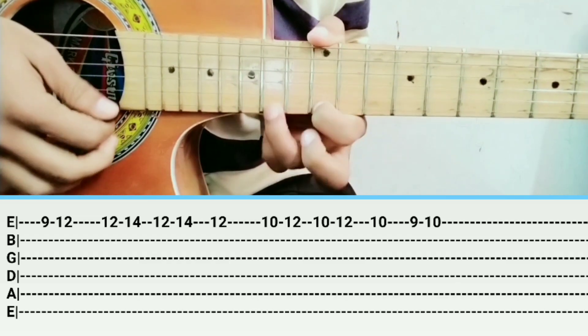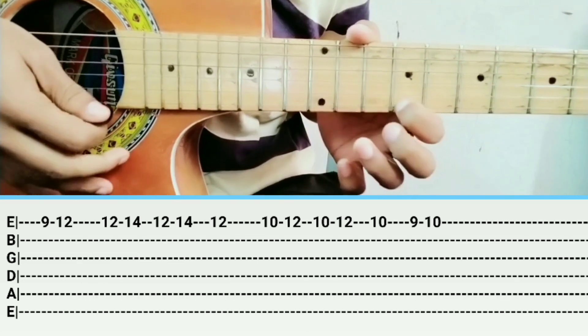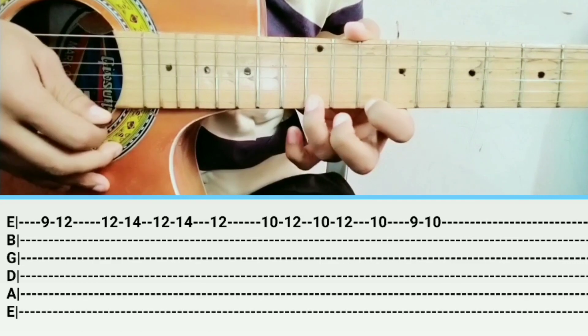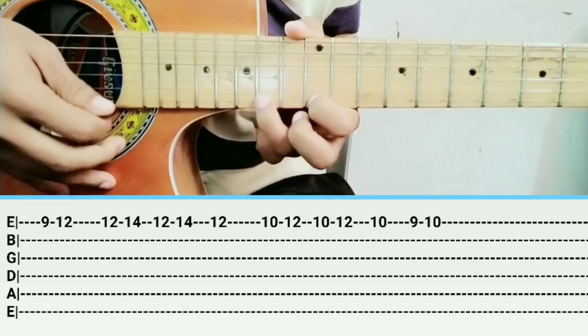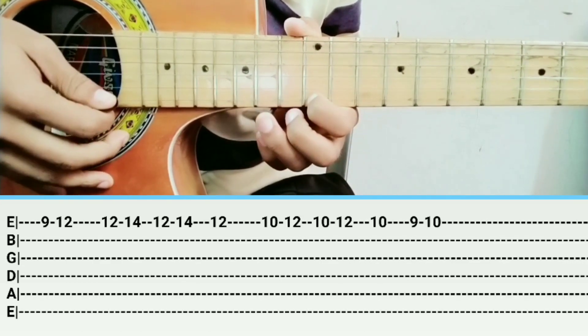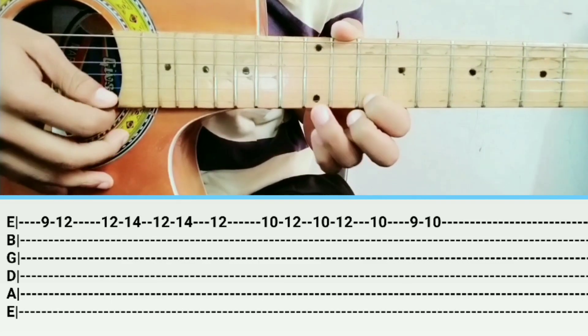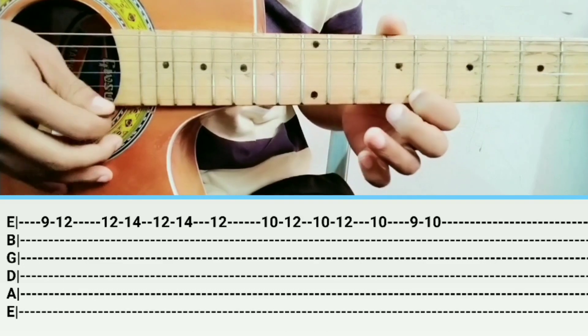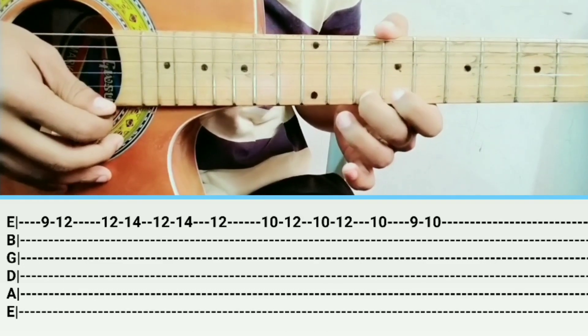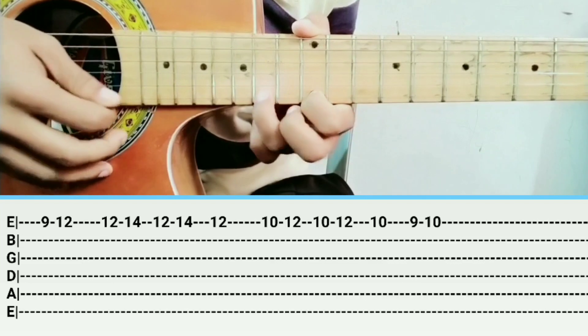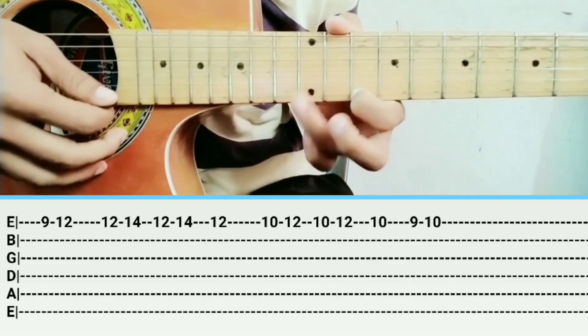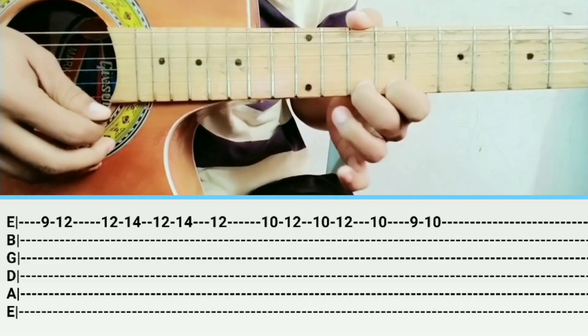So why are 9-12 string, sub E string fill 14-14-12, 12-10-12-10-12-10. Nothing. 9-10, 9-12-12-14-12-14-12, 10-12-10-12-10, 9-10. Okay.